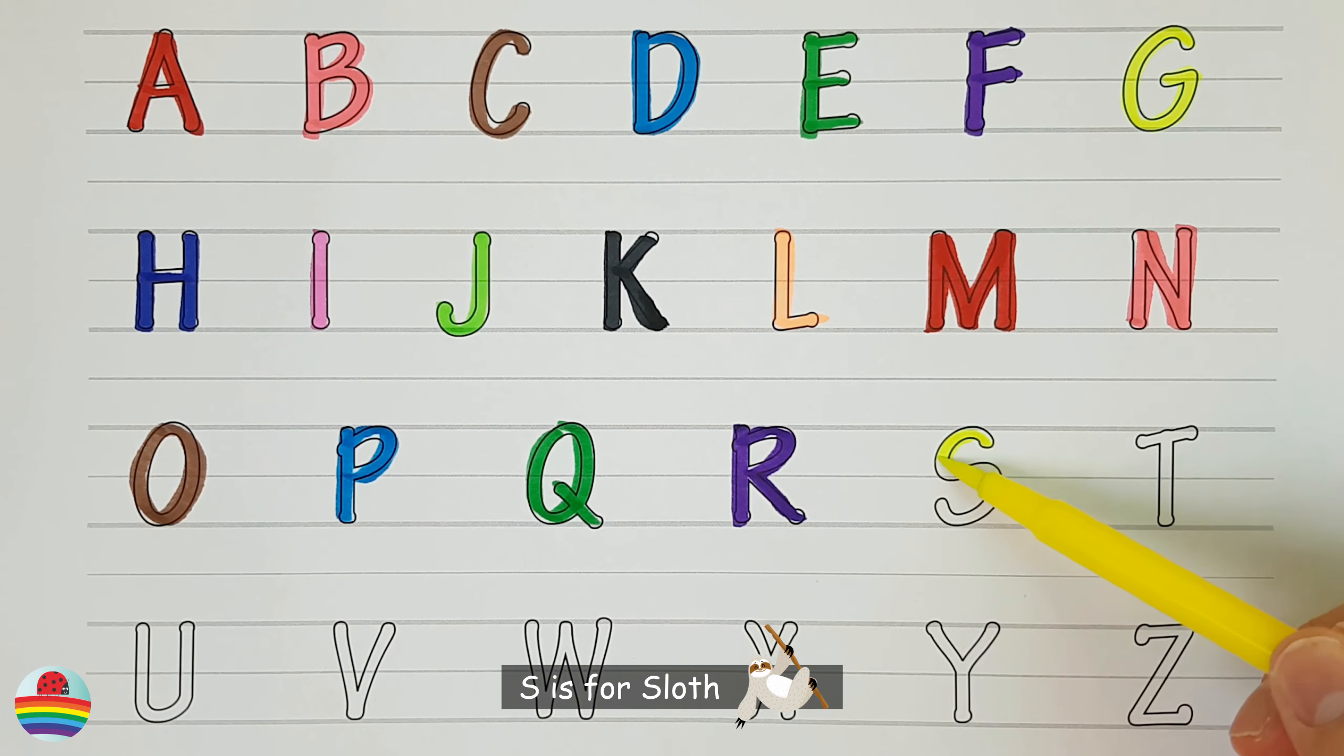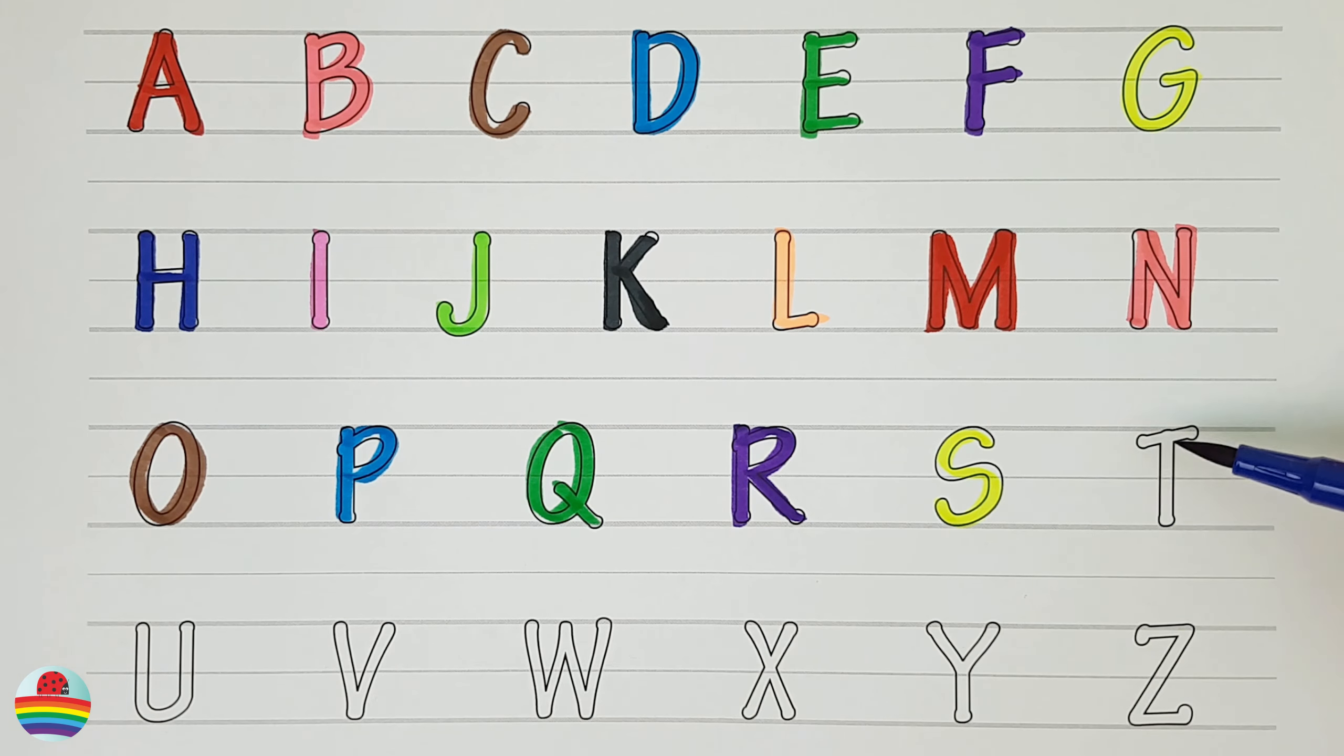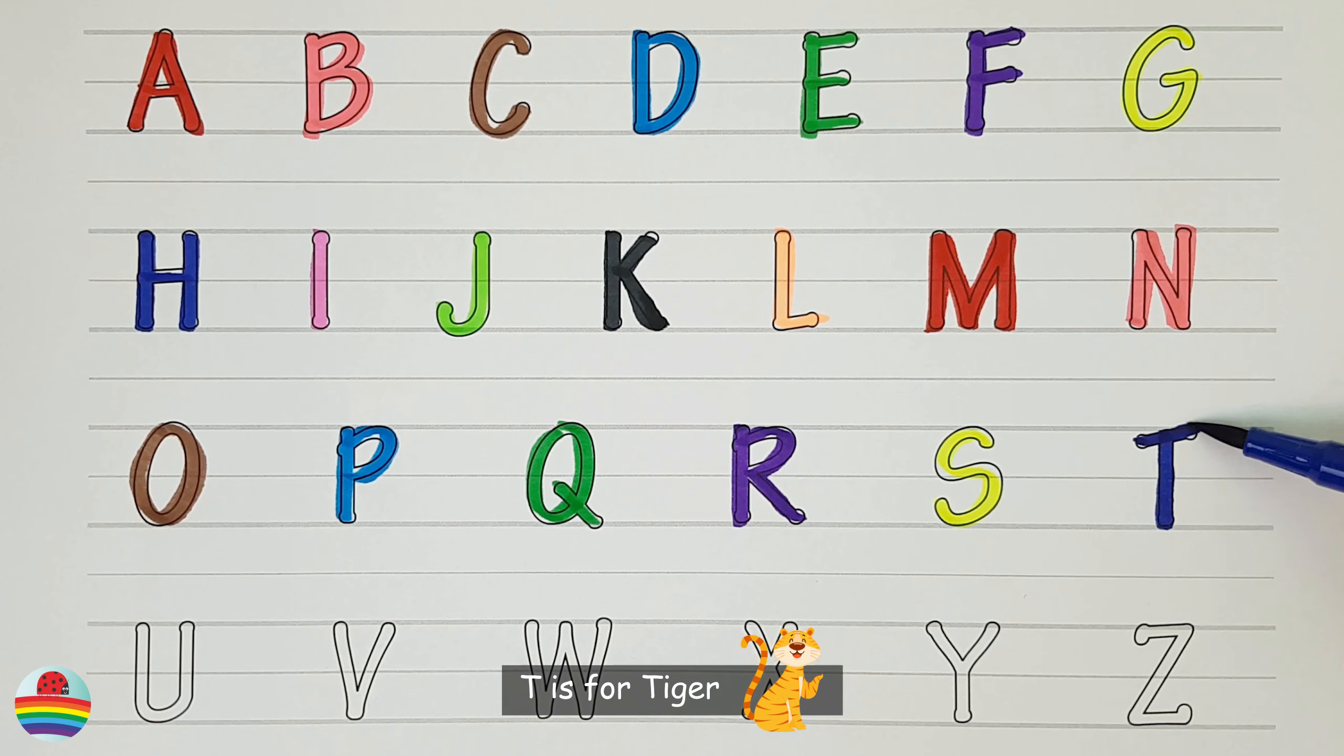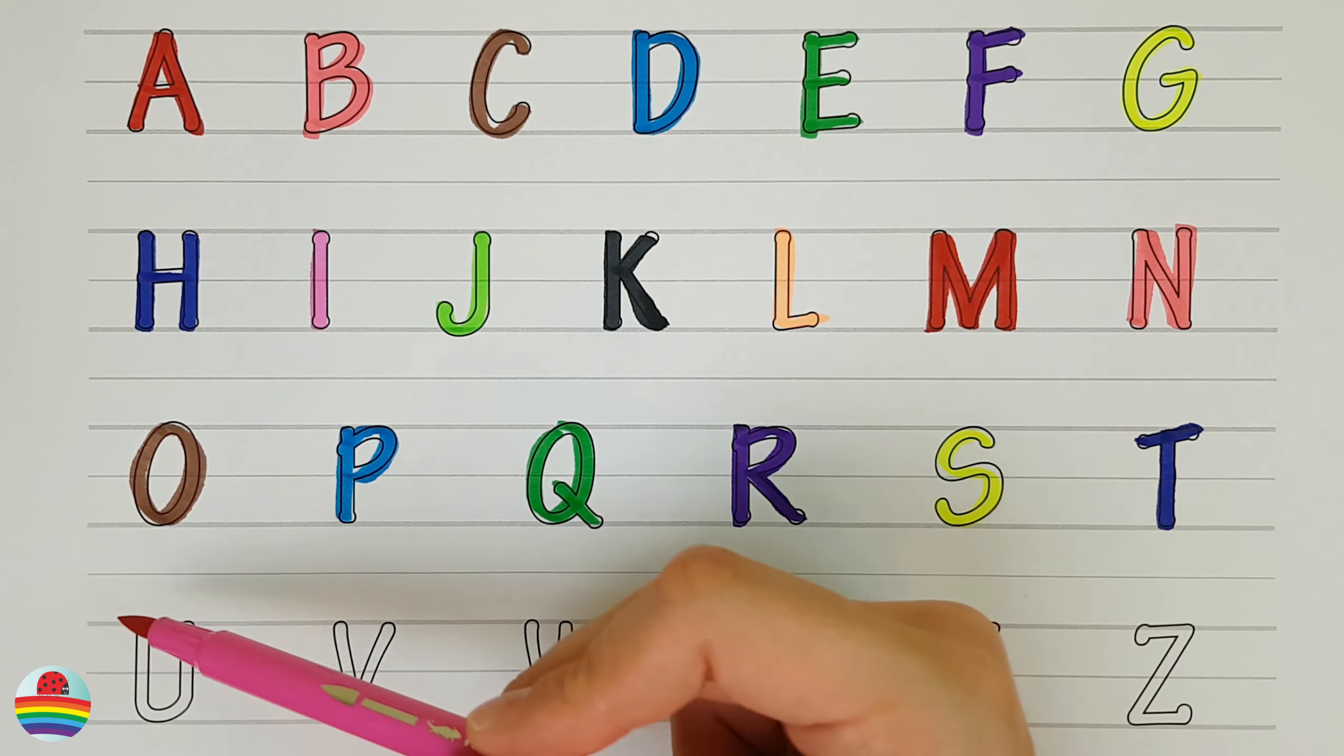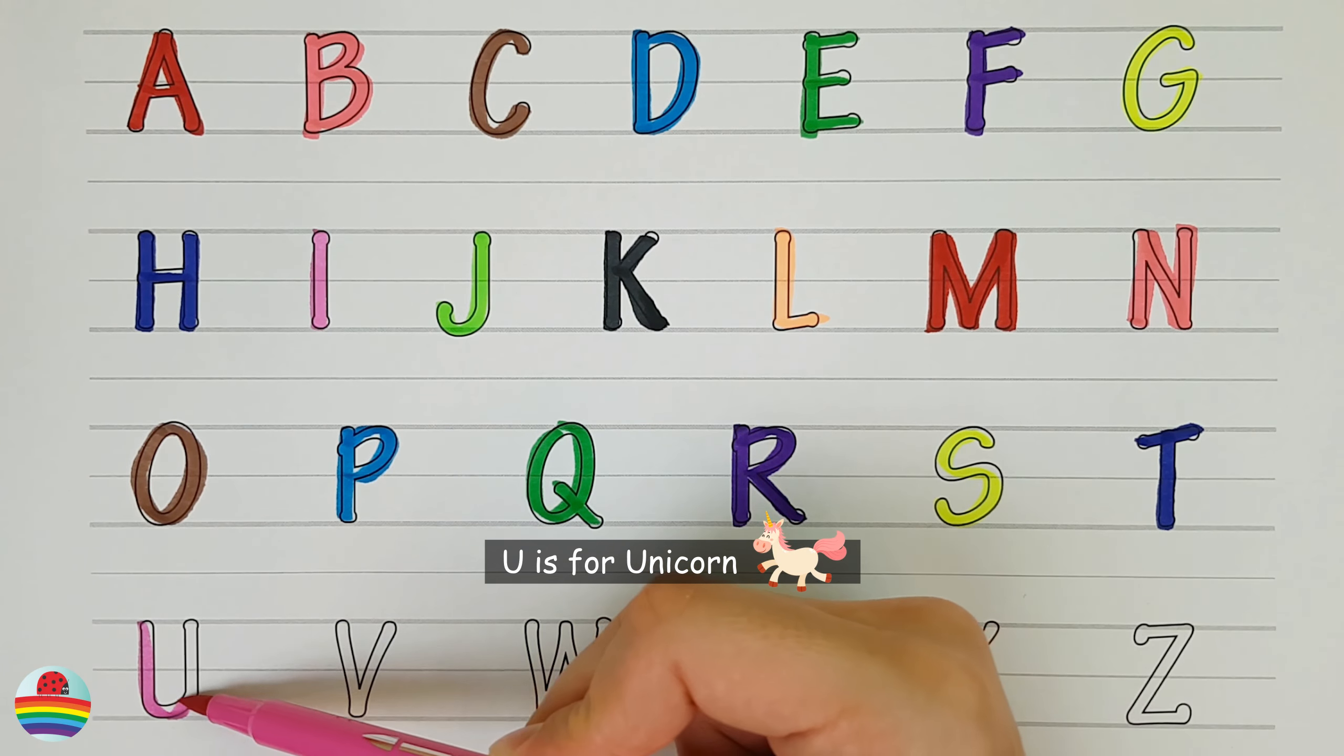S. S is for sloth. S. T. T is for tiger. T. U. U. U is for unicorn. U.